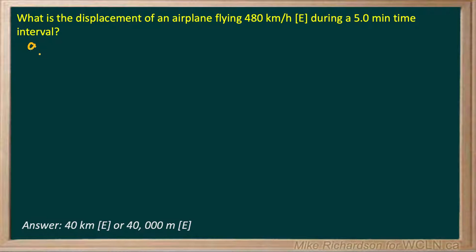Okay, again, we'll write down our given information. We know that the airplane is flying at a velocity of 480 kilometers per hour, and the direction of that velocity happens to be east. We know that the time that he's flying for, the time interval, is 5.0 minutes. And we want to know the displacement.